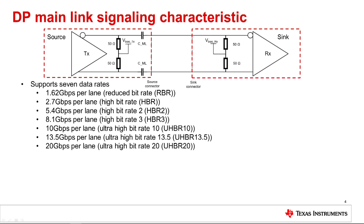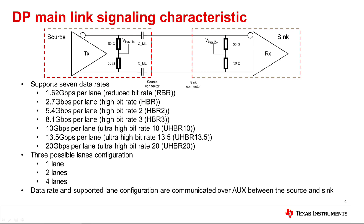As the data rate increases from 1.62 gigabits per second to 8.1 gigabits per second, the DP main link starts to suffer from signal distortion due to the package and the PCB copper and dielectric losses. The result is that the main link length is decreasing as the data rate is increasing. To support longer main link length, the addition of a DP signal conditioner in the form of a redriver or a retimer needs to be taken into consideration as part of the system design.